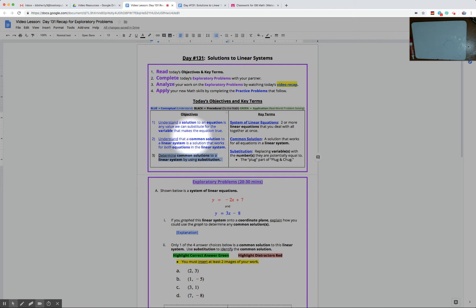Previously, we've been working with graphs and finding the common solution when we're given graphs. Today, we're going to continue to find common solutions to linear systems, but this time, we're only going to be given an equation and substitution. This new key term here is going to be our key to trying to find the common solution without a graph.